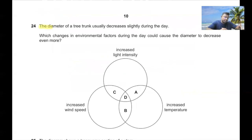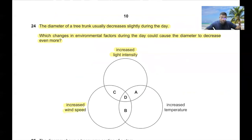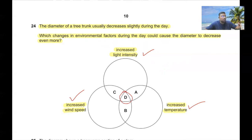Question 24: The diameter of a tree trunk usually decreases slightly during the day. Which environmental changes could cause it to decrease even more? Increased light intensity increases water evaporation; increased wind speed increases transpiration; increased temperature — all factors lead to a higher rate of transpiration. Option D is the correct answer. 24D.